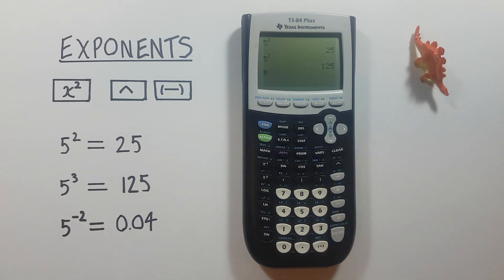We can use this to solve for negative exponents as well. So for example, if we wanted to solve 5 to the power of negative 2, we would start with our 5.